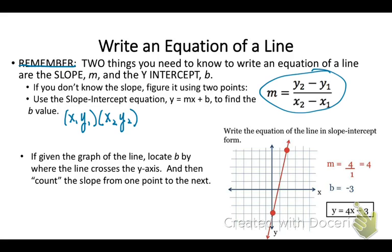If you're given a graph of a line, locate the y-intercept, the b value. From that point find another clear point and count the slope. How many up or down? That's rise. Then run, how many over? Notice from one point to the next I go up four over positive one. Now I can write the equation of my line in slope intercept form: y equals mx plus b, or y equals 4x minus 3.